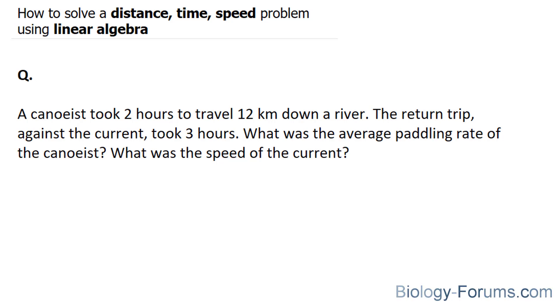The question reads, a canoeist took two hours to travel 12 kilometers down a river. The return trip against the current took three hours. What was the average paddling rate of the canoeist? What was the speed of the current?